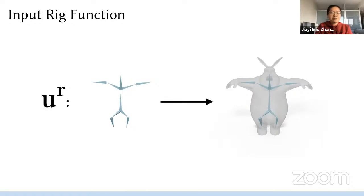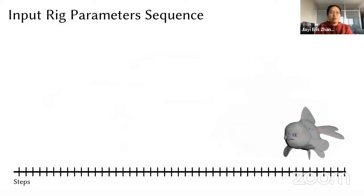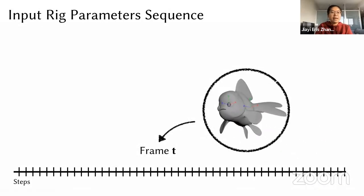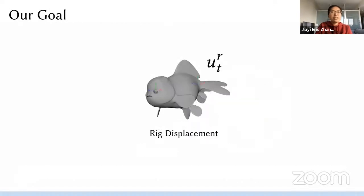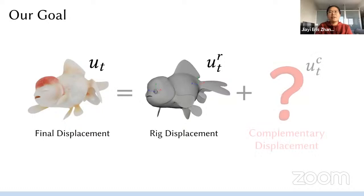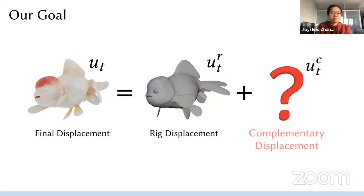The input to our method is a generalized rig function. Agnostic to rig types we generally treat them as a mapping from some low dimensional control parameters to mesh vertex positions. At the same time, we treat artists input as a sequence of such rig parameters at each frame. Given the rig displacement, we are expecting to achieve this energetic final displacement. So the problem really becomes how to find the most satisfying complementary displacement as a difference.